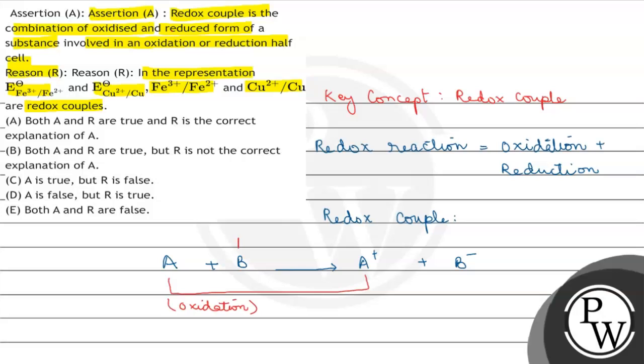Okay, and B what is happening? B accepts electrons to form B- negative form. That means B's reduction is happening.